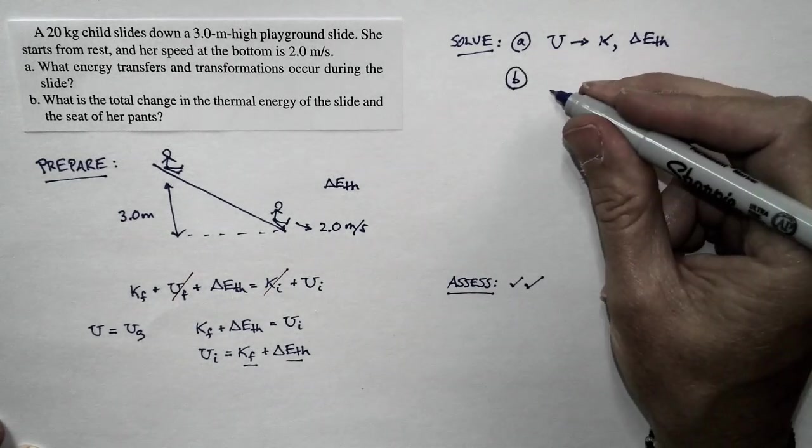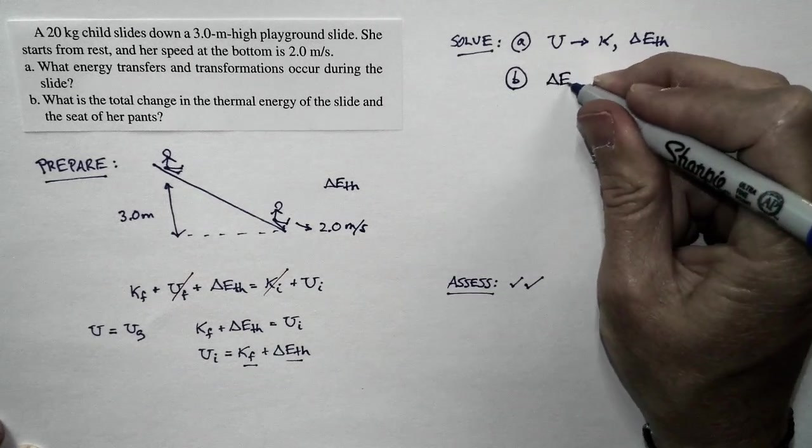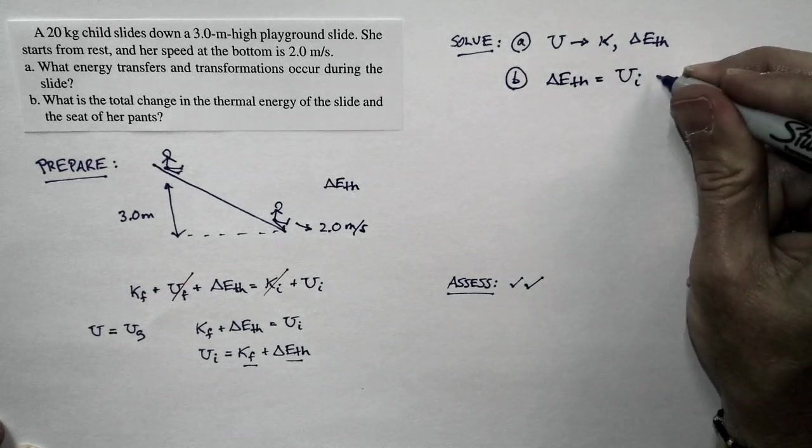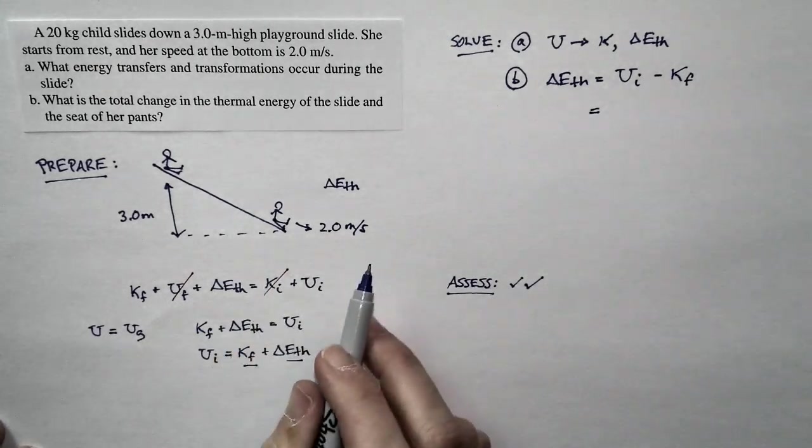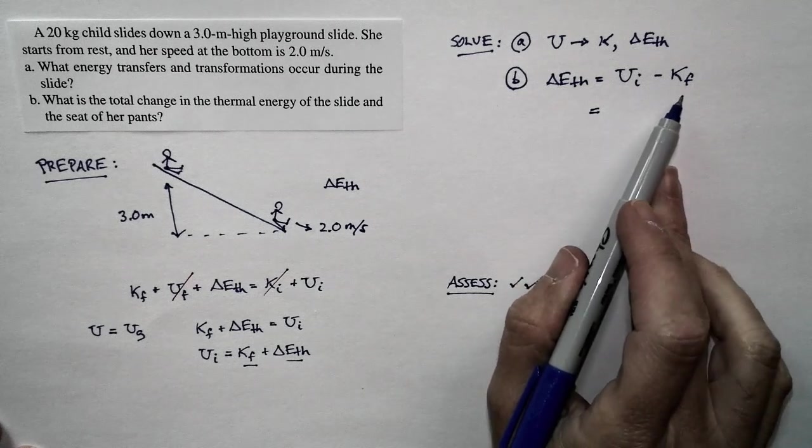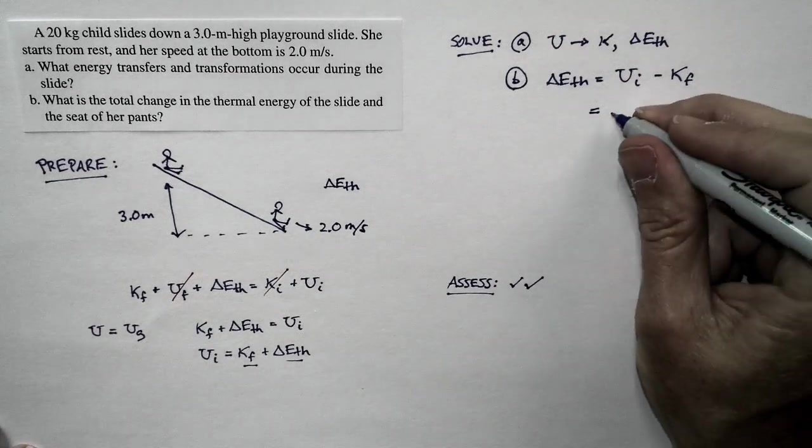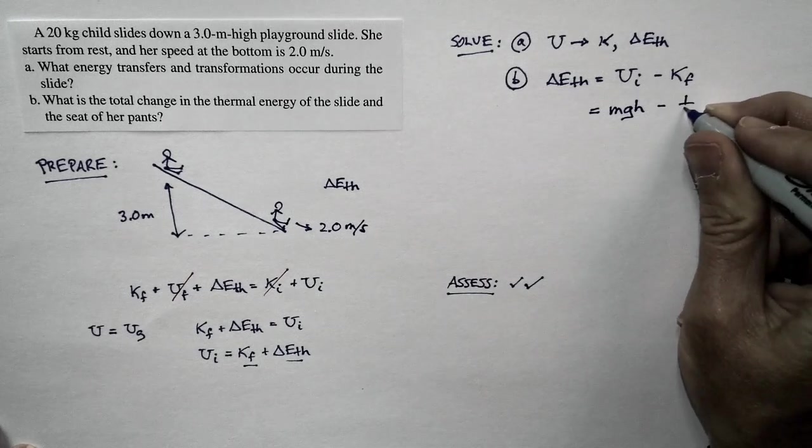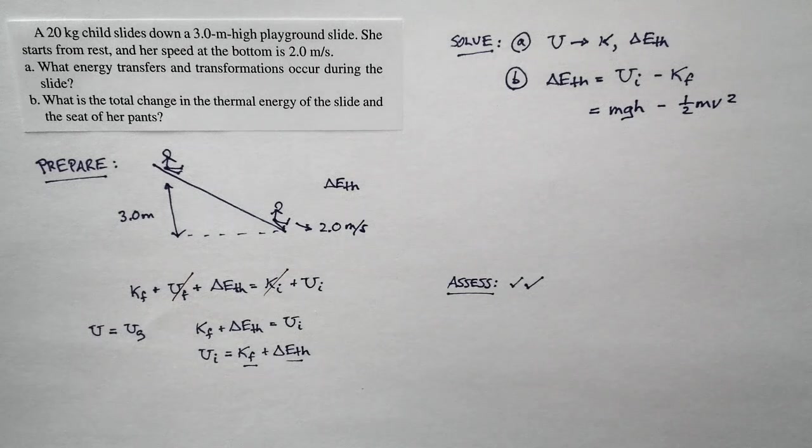We're going to solve this relationship. We're going to rewrite it to solve the change in thermal energy. The change in thermal energy is just equal to the initial potential energy minus the final kinetic energy. She loses potential energy, picks up some kinetic. Anything left over is thermal energy. Her initial potential energy is M times G times H. The kinetic energy is one half times M times V squared. And we know numbers for these different things.